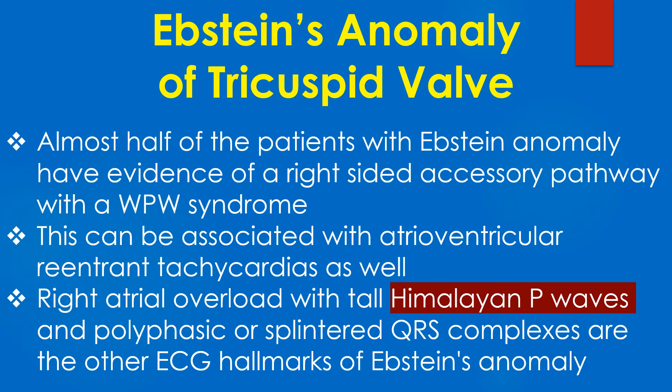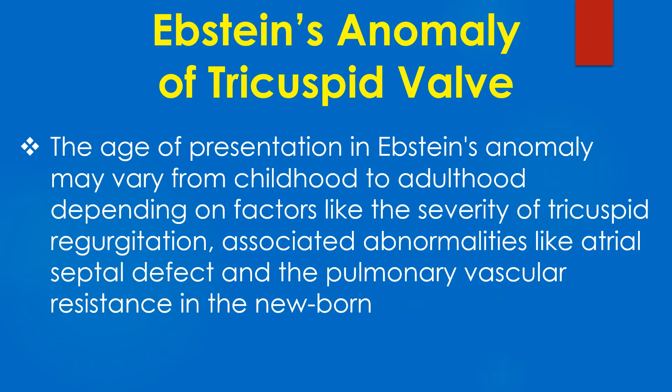Right atrial overload with tall Himalayan P waves and polyphasic or splintered QRS complexes are the other ECG hallmarks of Ebstein's anomaly.